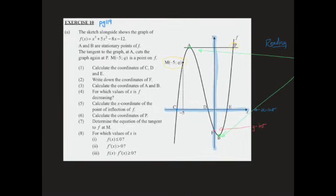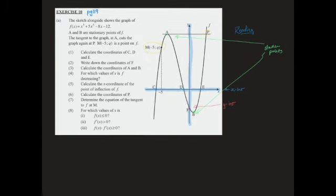So now that we've done that, let's read through it. The sketch alongside shows the graph of the function. a and b are stationary points, just like we said they would be. The tangent to the graph at a cuts the graph again at p. M is a point on f. First question: calculate the coordinates of c, d, and e. Now because we went through it just now, we know already that the coordinates of c, d, and e are our x-intercepts. And in order to find the x-intercept, what do we need to do? We make y equal to 0.